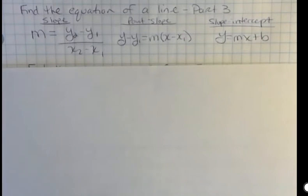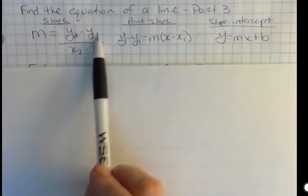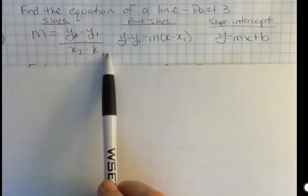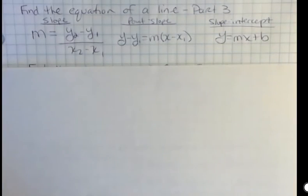There's three important formulas that you need to know to carry this out. One is the slope formula: if you subtract your y's on the top and your x's on the bottom when you have two points, you can find the slope. One is the point-slope equation, which we introduced in the last video, and one is the slope-intercept equation, which we've been talking about for a while.